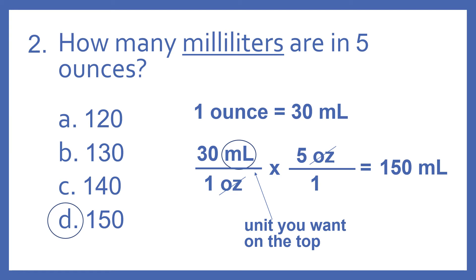and we multiply that by five ounces over one. We always put the units that we want on top, so we want milliliters. And then we can see we have an ounce on the bottom and an ounce on the top, so those cancel and we're left with milliliters.